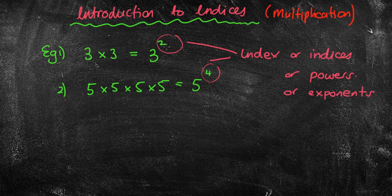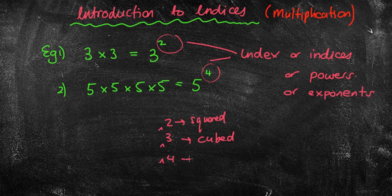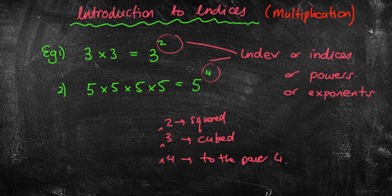Often if it's a 2, we'd say it is squared. If it was a little to the power of 3, it'd be cubed. And if it's to the power of 4, we just say to the power of 4 — there's nothing really used for 4 or higher. So this one I would call 3 squared, and this would be called 5 to the power of 4. Just some terminology that we can use.